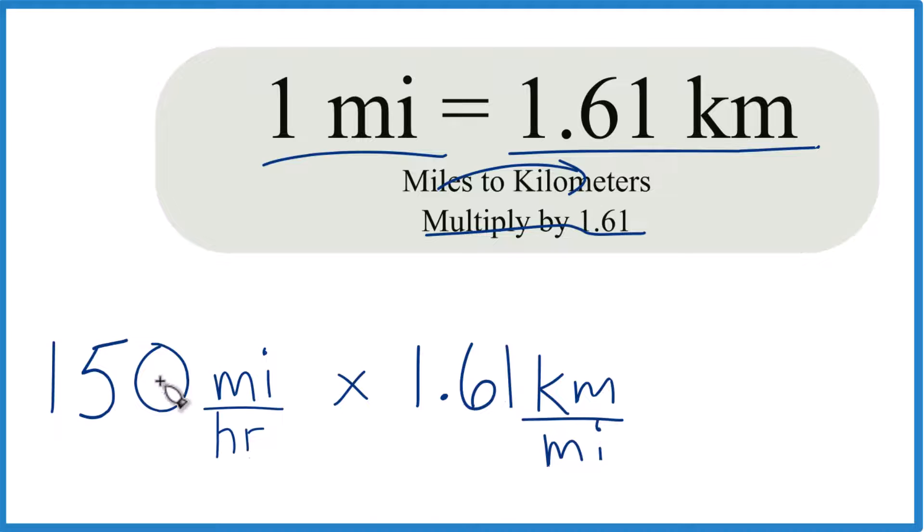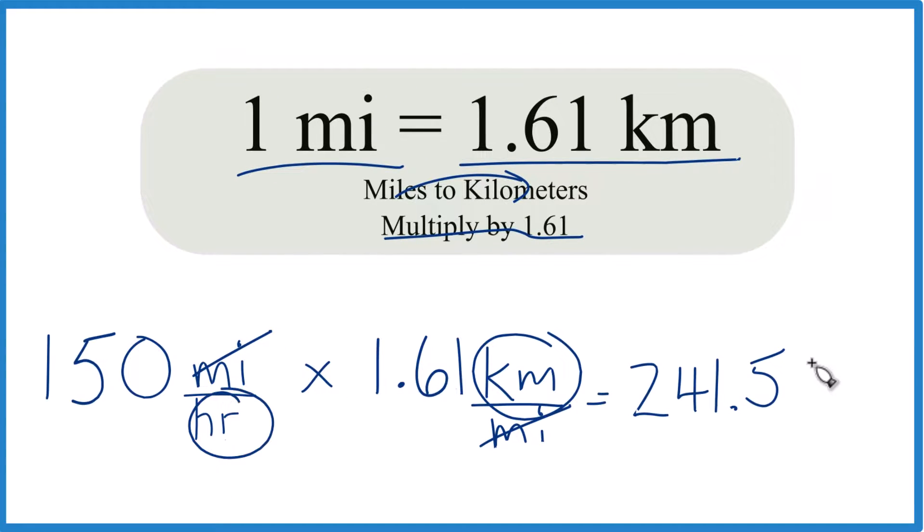So now we multiply 150 times 1.61, we get 241.5, and because we had miles on top here and on the bottom here, they're gone, left with kilometers per hour. That's what we're looking for.